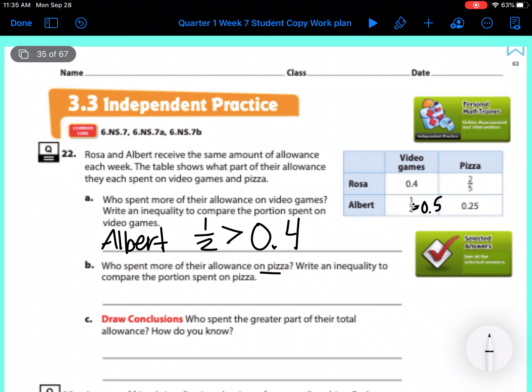Now who spent more of their allowance on pizza? Write an inequality to compare the portion spent on pizza. So we have two fifths and 0.25. So let's change them to decimals. I need to get my two fifths into a fraction over 10. So 5 times 2 equals 10. Whatever I do to the bottom I have to do to the top. 2 times 2 is 4. So that's 0.40 because that could be 40 over 100. And then we have 25 hundredths. So Rosa spent more. So we're going to do two fifths is greater than 0.25.